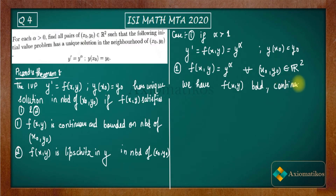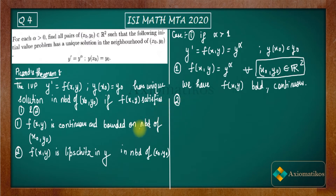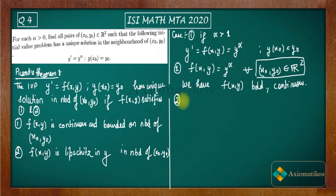It's a continuous function — there's no problem with continuity. So part one is proved: f(x,y) is continuous and bounded in the neighborhood of (x₀, y₀) for every (x₀, y₀) ∈ ℝ². For part two, I'll use the theorem that if the derivative of a function is bounded, then the function is Lipschitz. Bounded derivative implies Lipschitz.